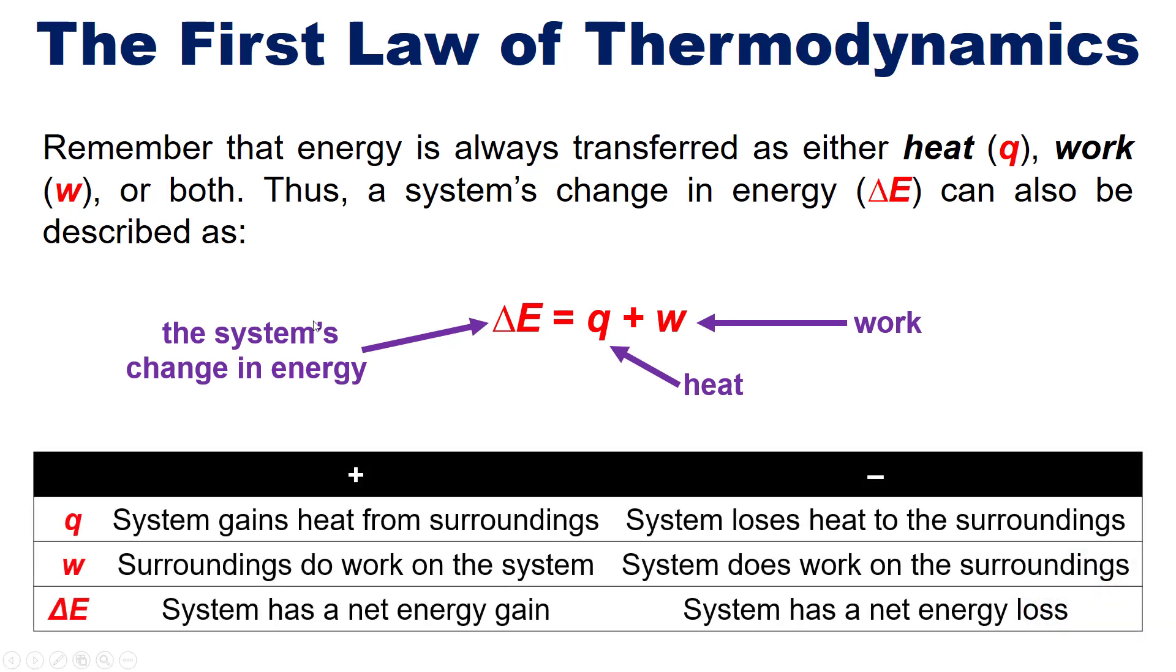To sum up then, in any chemical or physical process, if you have a positive Q, the system is gaining heat from the surroundings. If you have a negative Q, the system is losing heat to the surroundings.